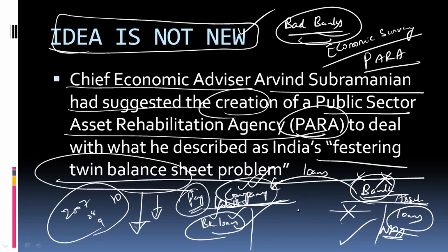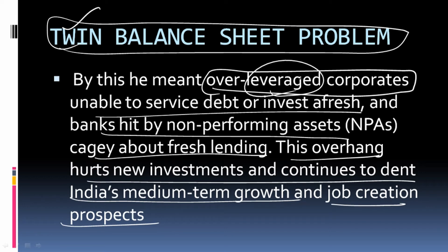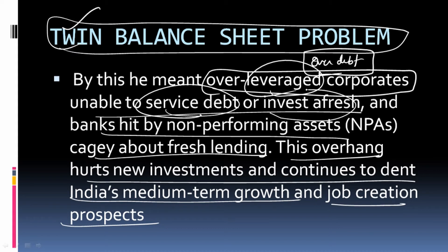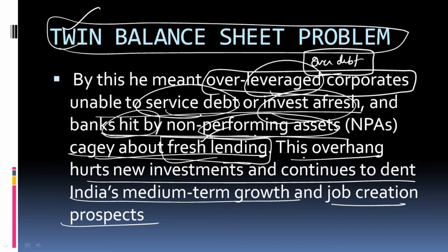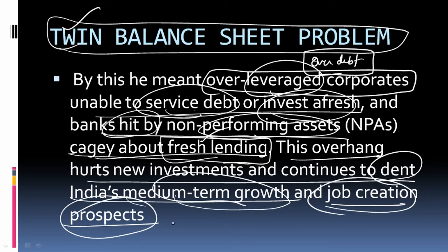Over-leveraged means over-indebted. Those corporates which have taken too much debt are unable to service it or invest afresh. They don't have money because the existing loans aren't being repaid, so they can't get further funding. Banks hit by NPAs are reluctant about fresh lending. This overhang hurts new investments and continues to dent India's medium-term growth and job creation prospects.